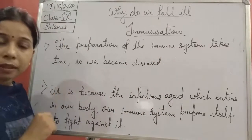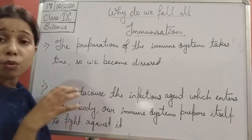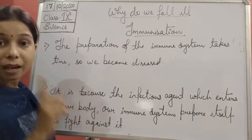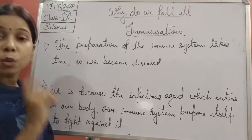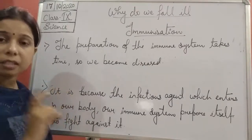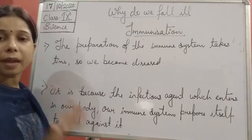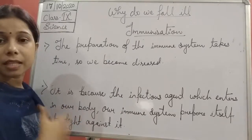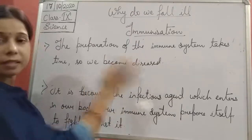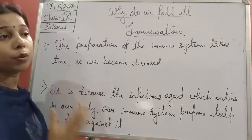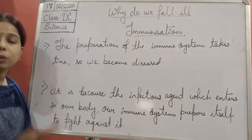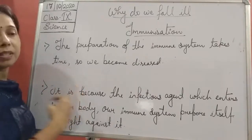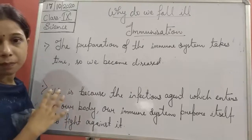When the microbe enters your body the first time, your immune system starts preparing itself to fight against that particular disease — that infectious agent which entered first time. But since preparation takes time, we become diseased until the immune system is ready. This happens the first time because our immune system does not know about that microbe or infectious agent, so it starts preparing itself to fight against it, which takes time, and so we get the disease.